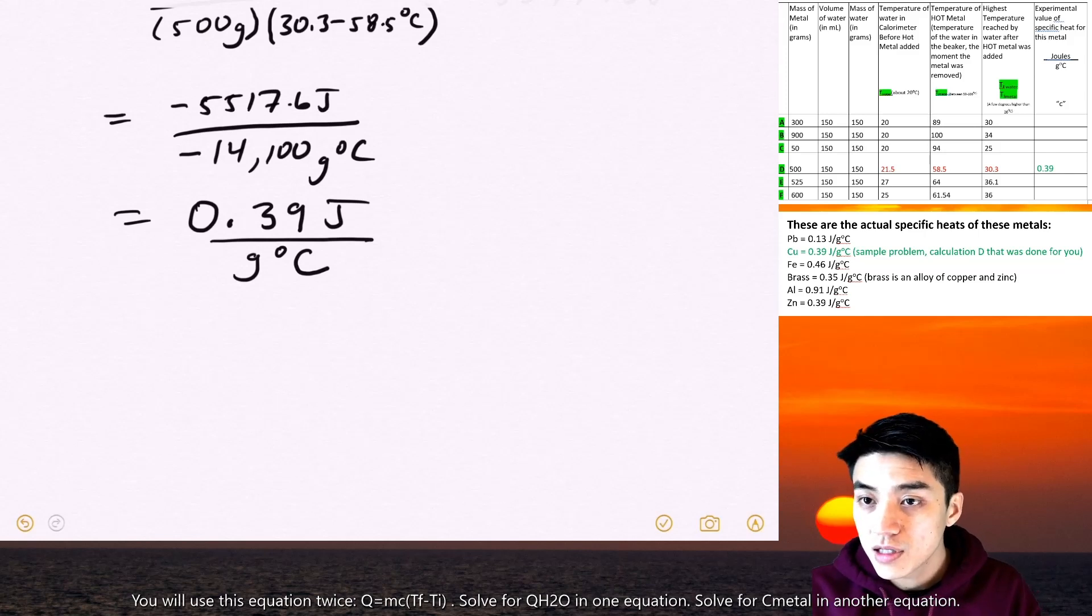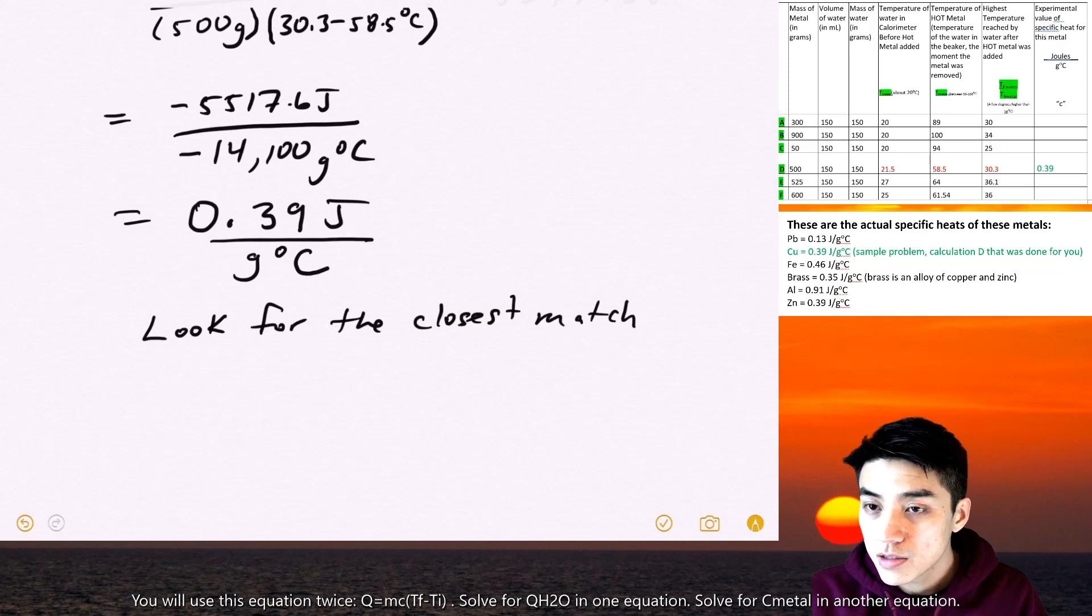So this was a calculation that I also typed in on your lab handout. And you can just rewind this so that you understand how to do these calculations for the other five samples. We look for the closest match. 0.39 is actually copper. It could also be zinc, but sample D just looks like copper. So we can infer that.